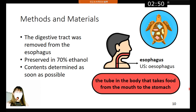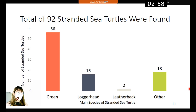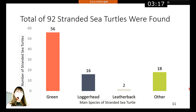To clarify, the esophagus is a food pipe that takes food from the mouth to the stomach. In this graph, the x-axis represents the main species of stranded sea turtle and the y-axis represents the number of stranded sea turtles. A total of 92 stranded sea turtles were found: 56 green, 16 loggerhead, and 2 leatherback turtles. Moreover, gut contents were collected from 38 green, 10 loggerhead, and 2 leatherback turtles.